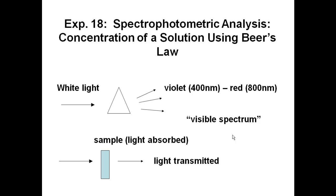When white light passes through a prism, it is broken into a spectrum of colors ranging from 400 nanometers, which is violet light, to 800 nanometers, which is red. We see this color with our eye, and this is referred to as the visual spectrum.